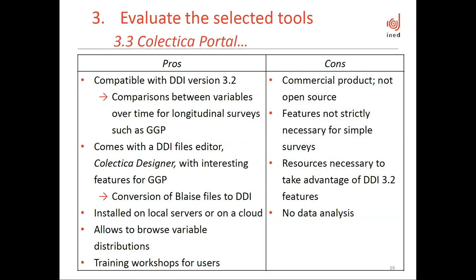Moving to Colectica Portal: among its advantages, it is compatible with DDI 3.2, which allows for comparison of variables — particularly interesting for longitudinal surveys like GGP, where we can compare variables over time. It comes with a DDI files editor called Colectica Designer, which has interesting features for GGP because it allows converting BLAISE files to DDI — BLAISE being the software used by most GGP countries for their data collection. It can be installed on a local server or in the cloud, allows browsing variable distributions, and offers training workshops.